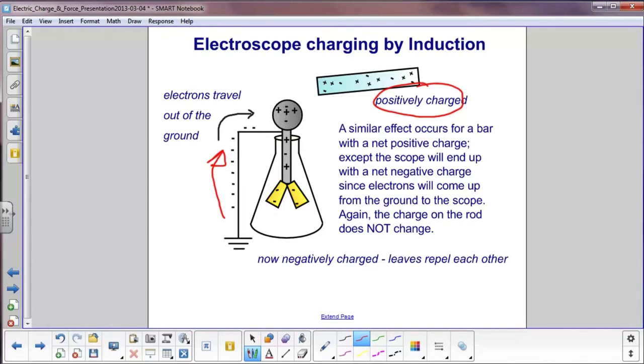In this case, they travel up out of the ground, spread out on the electroscope. You now have negative charges here at the bottom. They will still repel itself. And again, the charge on the rod does not change.